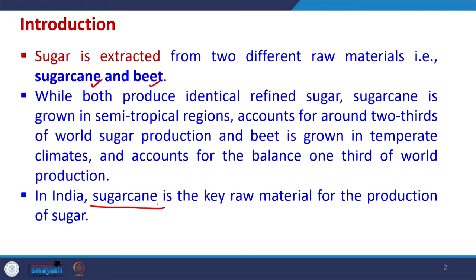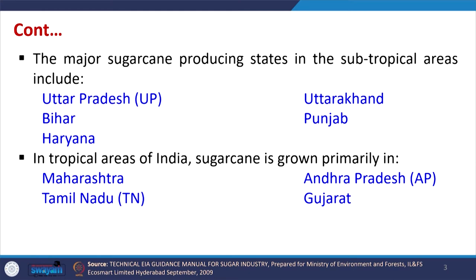The major sugar producing states in subtropical areas within India include Uttar Pradesh, Bihar, Haryana, Uttarakhand, and Punjab. Similarly, the tropical areas of India where sugarcane is produced include Maharashtra, Andhra Pradesh, Tamil Nadu, Gujarat, etc. Sugar industry is one of the most important agro-based industries of India and is responsible for creating a large impact on the rural economy and the country's overall economy.